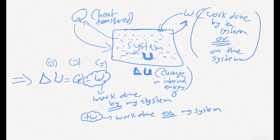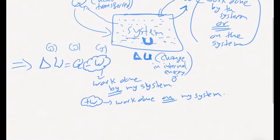This eliminates the confusion between chemistry and physics students, which stems from the perspective of the system. From a physics point of view the formula is Q minus W; from a chemistry point of view it's Q plus W. To avoid this, simply keep minus W as work done by your system, and switch to plus W when work is done on your system.